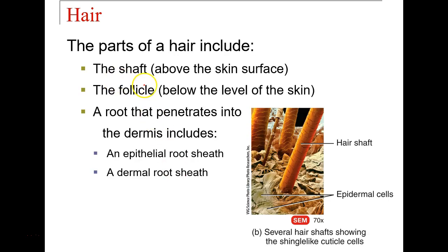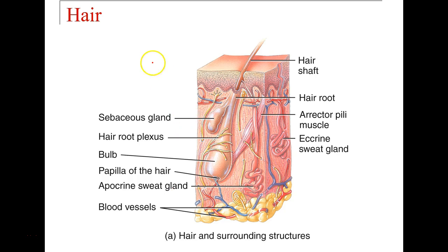Parts of a hair: we have the shaft and follicle. The shaft is going to be the part you actually see projecting above the surface of the skin. The follicle will be below the skin. The root will be housed within the follicle and covered by an epithelial root sheath and a dermal root sheath.